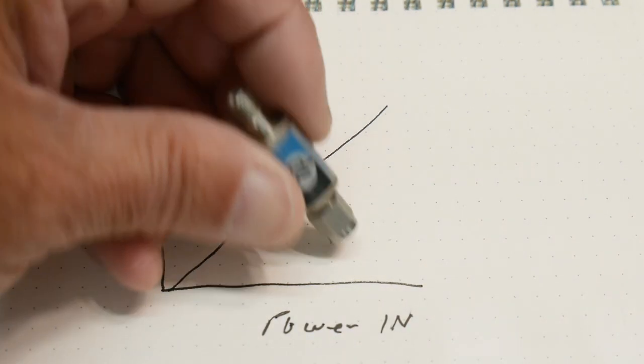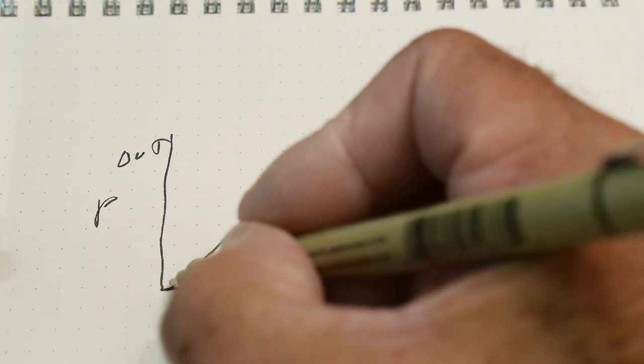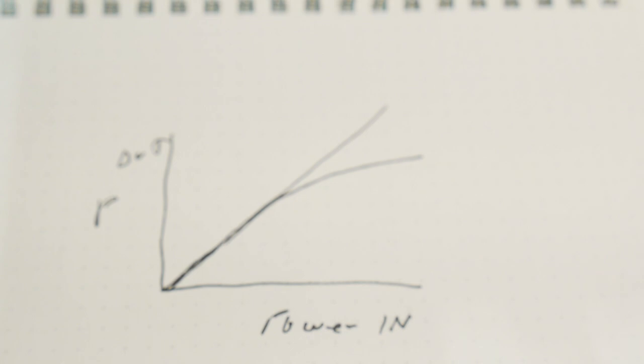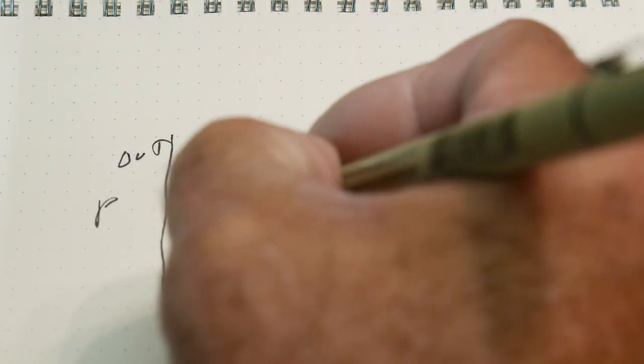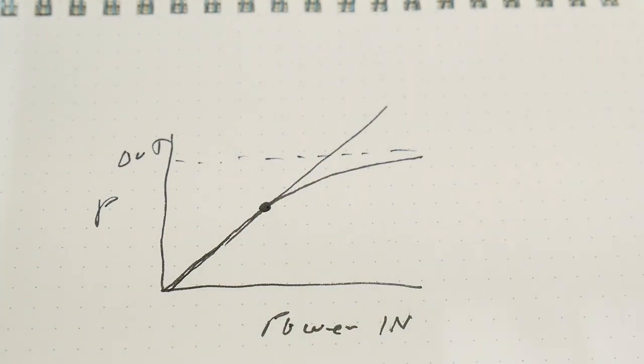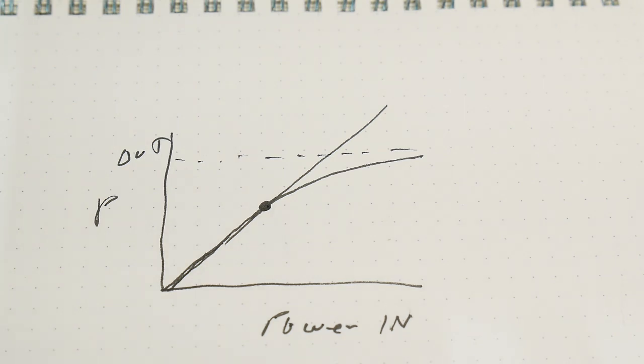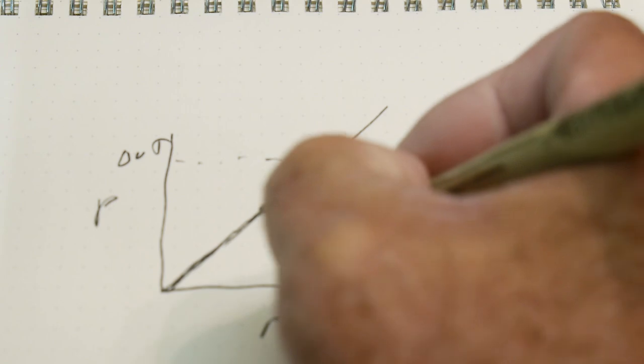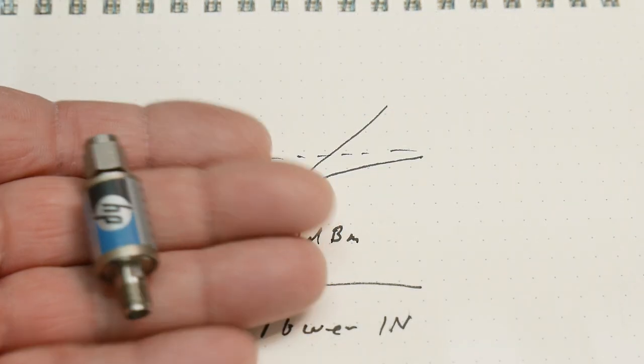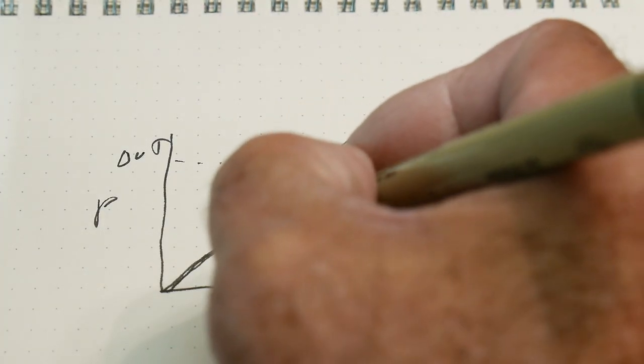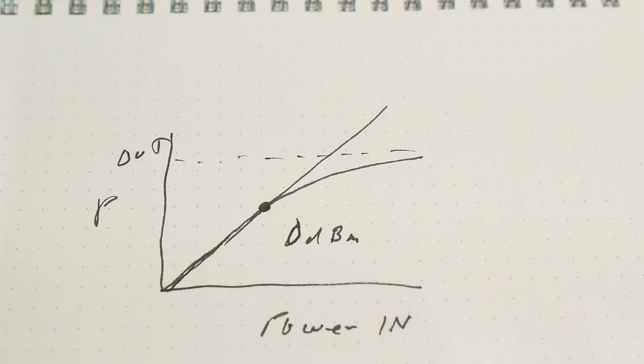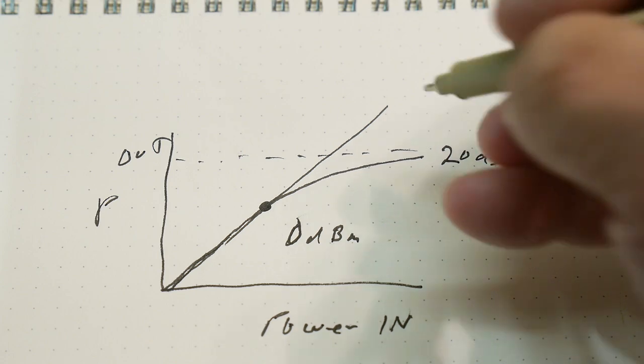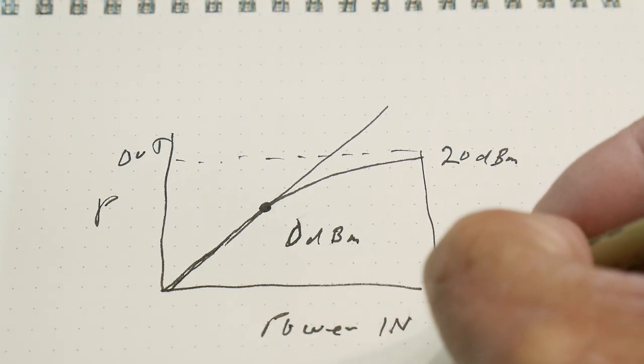This thing is sort of a nonlinear attenuator. For a particular part of the way, it follows this line just fine, and then as you get higher in power, it starts to fall off like this. Where it starts to fall off and how far it falls off is parameters of the device. This particular device stays linear - anything below about 0 dBm it looks just like a wire. Anything above 0 dBm it's going to start to roll it off, and it'll roll it off to a maximum of about 20 dBm.